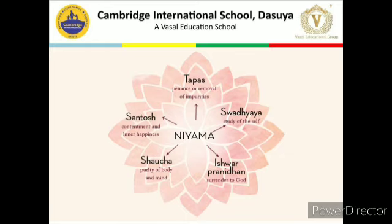To summarize the Niyamas: Socha means purity and cleanliness. Santosha means contentment. Tapas means self-discipline. Swadhyaya means self-study. Ishwara Pranidana means surrender to the divine will.